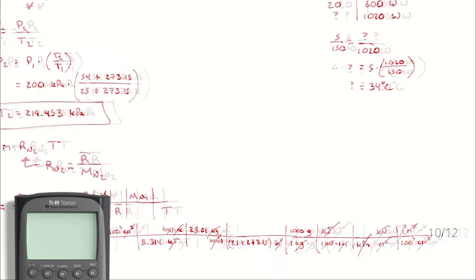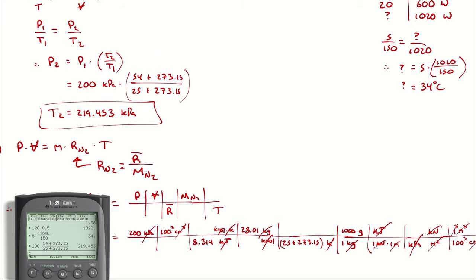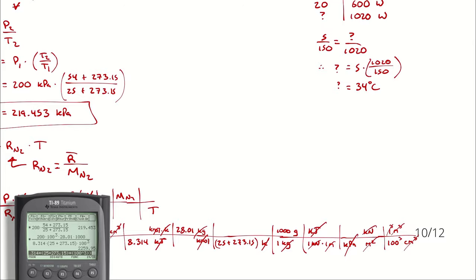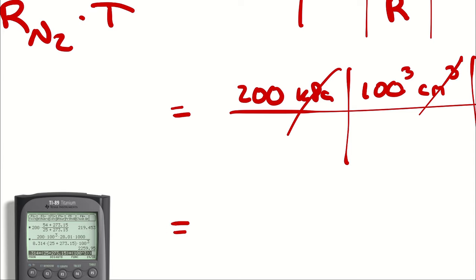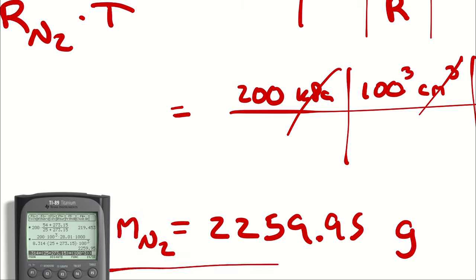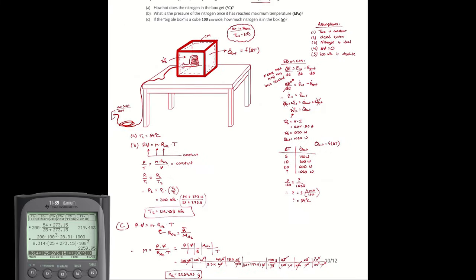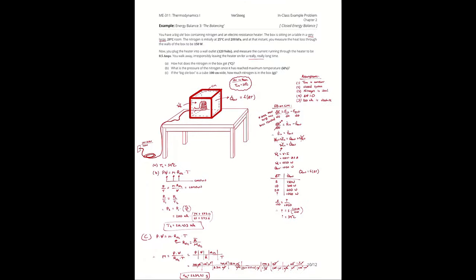Putting it all into the calculator: 200 times 100 cubed times 28.01 times 1000, divided by 8.314 times (25 + 273.15) times 100 cubed. The 100 cubed terms cancel. The result is 2,259 grams of nitrogen. And that's that problem.